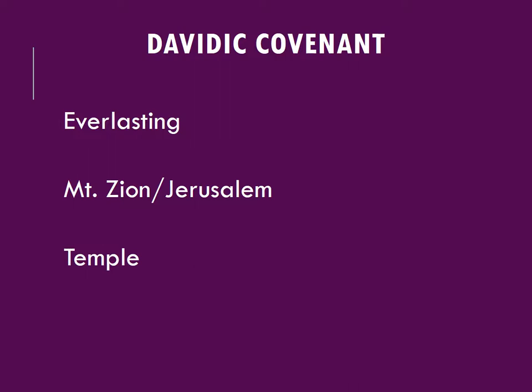The anointing of David leads to what we call the Davidic Covenant, which has a few key characteristics. As discussed in previous videos, a covenant is a contract made by two parties, each with certain terms to uphold. For the Davidic Covenant, the covenant is primarily on the side of God. God promises that David's line will be everlasting, and there is some importance placed on Mount Zion or Jerusalem, as well as the temple in Jerusalem. The promise is that the covenant will always continue through David's lineage.